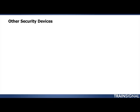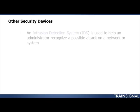Now that we know about firewalls — the first and foremost primary device when it comes to security — let's talk about some other security devices. We have something called an intrusion detection system, or IDS. Just like a firewall, an IDS can be either host-based, meaning intrusion detection on a single computer, or network-based. The idea is that it helps an administrator recognize a possible attack, whether on the entire network or an individual system.